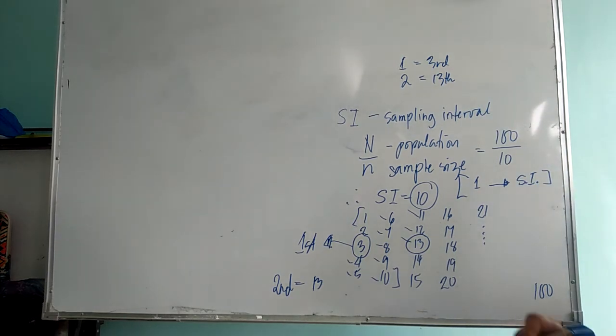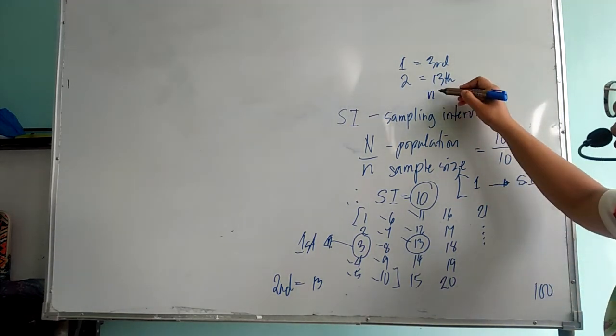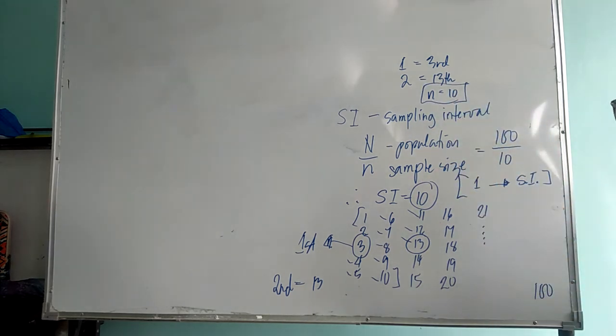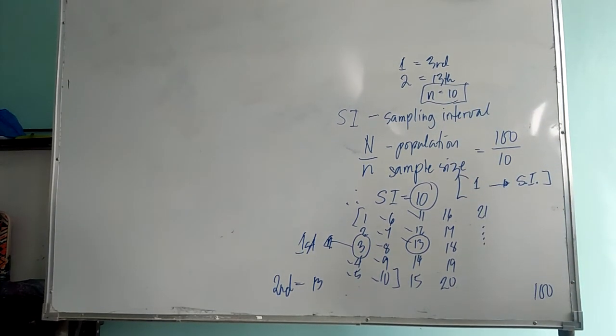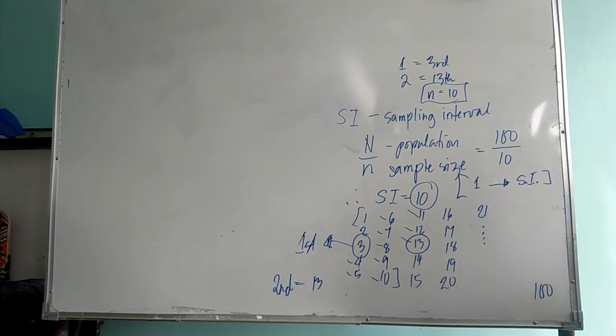You do the same until you get 10 desired samples. That's how you use systematic sampling.